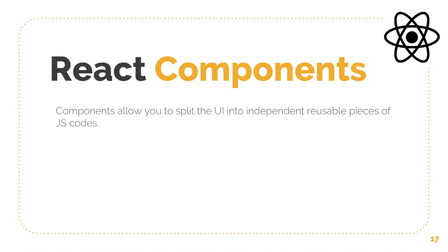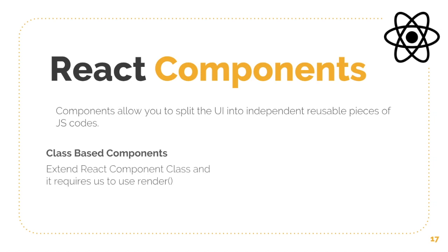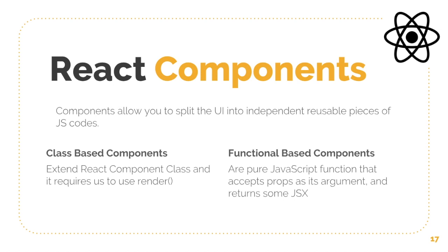There are different types of components. One is class-based components and the second is functional-based components. Class-based components extend the React component class and require a render method. The render method is used to render content on your site. Functional-based components are pure JavaScript functions that accept props as an argument and return some JSX.